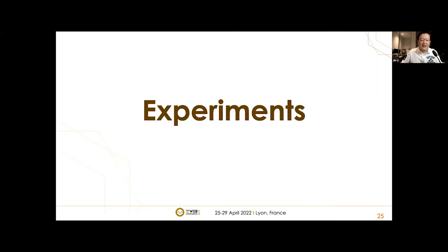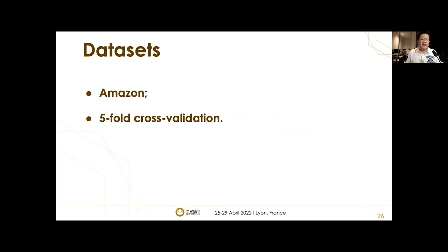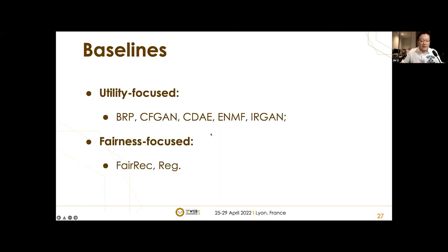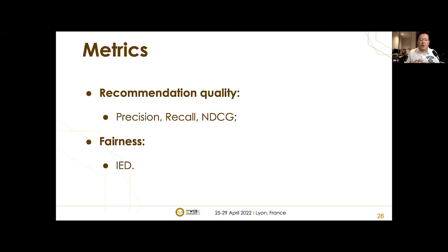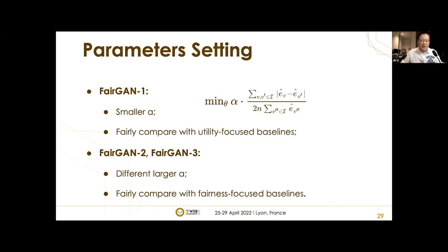To evaluate FairGAN, we conduct experiments with a real-world e-commerce dataset collected from Amazon, using five-fold cross-validation. We compared with five state-of-the-art utility-focused baselines and fairness-aware baselines FairRank and REC. We employ common top-K ranking metrics for recommendation quality and our fairness metric IED. Larger quality metrics indicate better recommendation quality, while smaller IED means fairer recommendations. We set FairGAN at different levels of fairness controlled by the accuracy-fairness trade-off parameter alpha, denoted as FairGAN 1, 2, and 3.